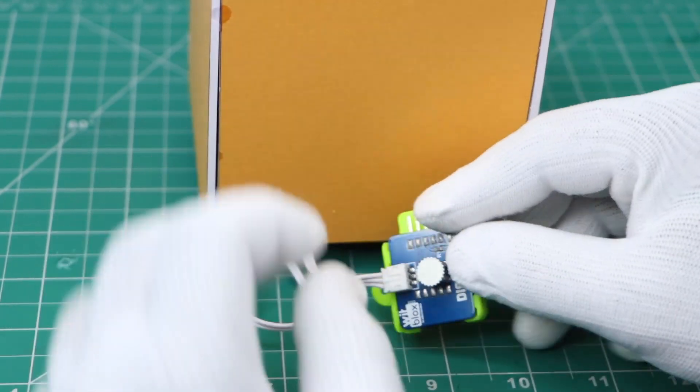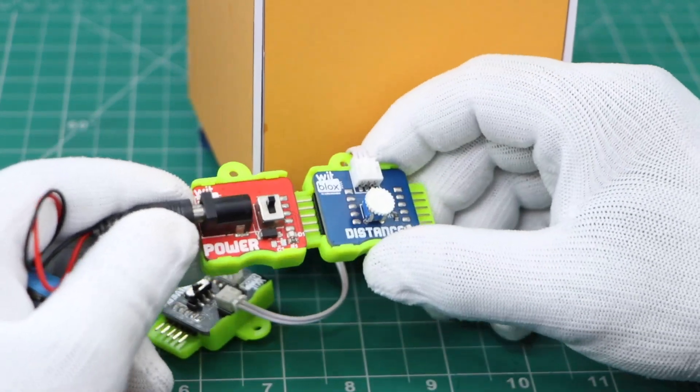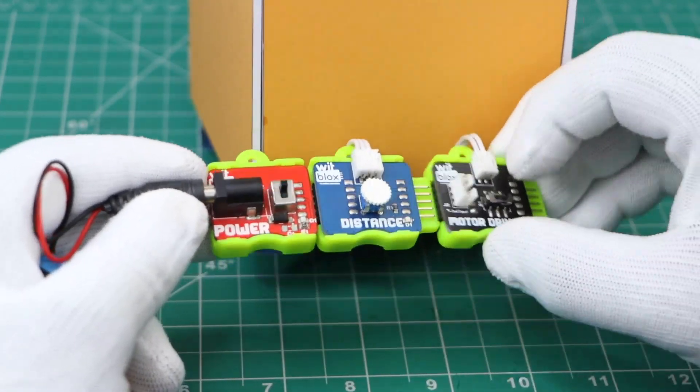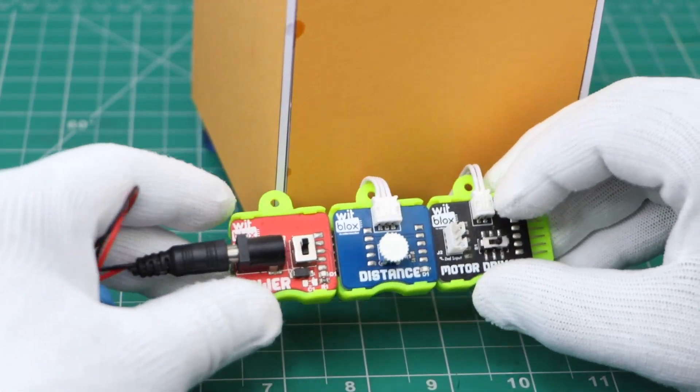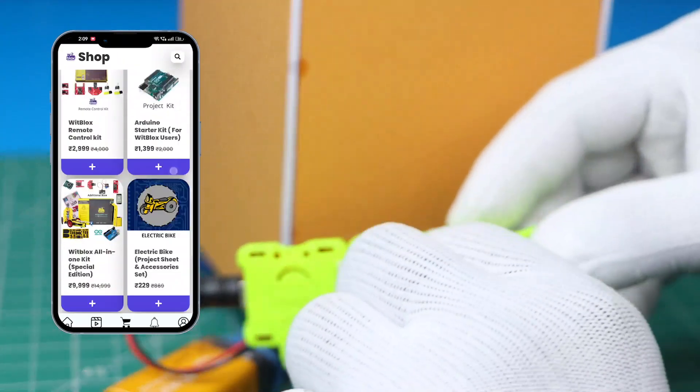Connect the IR sensor to the distance blocks. Connect the power to distance blocks and distance to motor driver. All these blocks are available in the shop in the Bitblocks app.